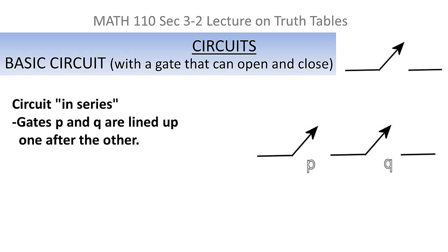Now, this can get very complicated, but we're going to keep it very simple. We're going to have two types of gates. One type forms something we call a circuit in series, and that's when you have gates that are lined up in a row. Those are called circuits in series.